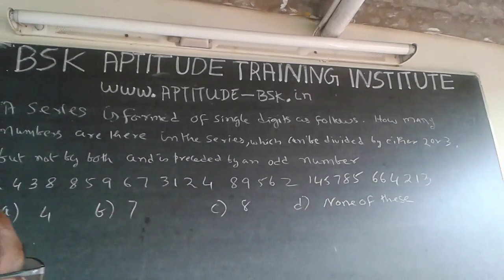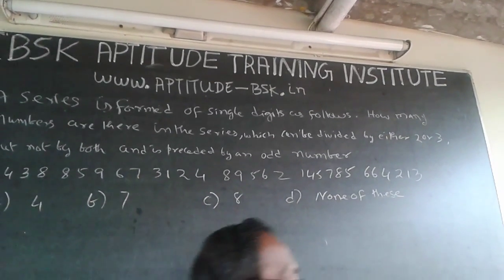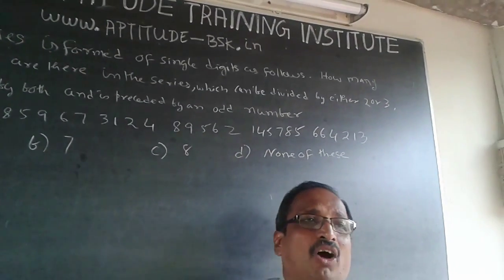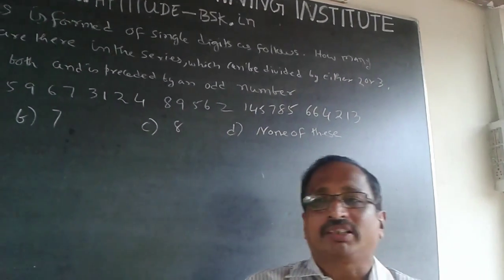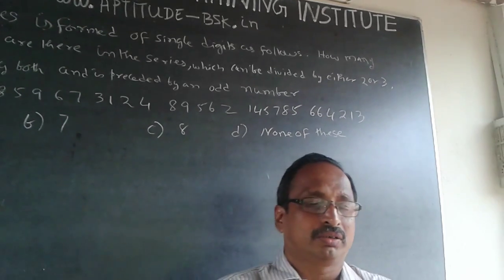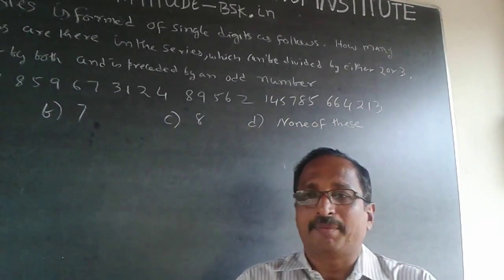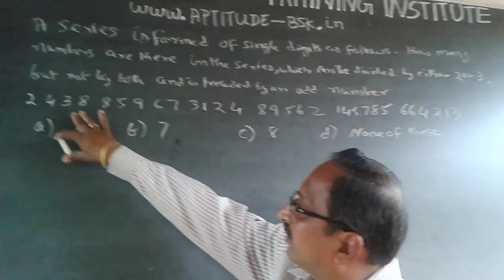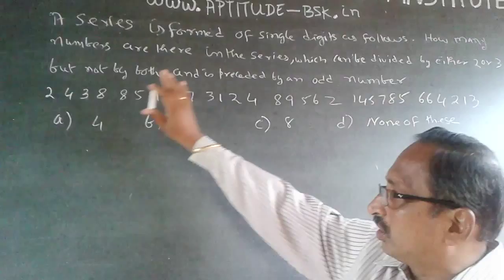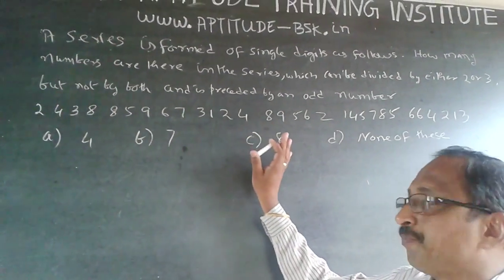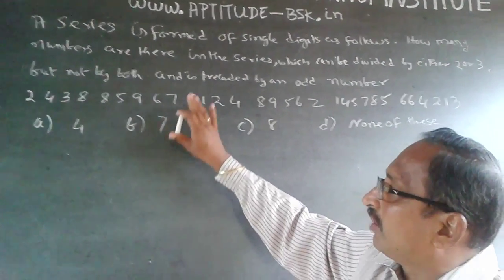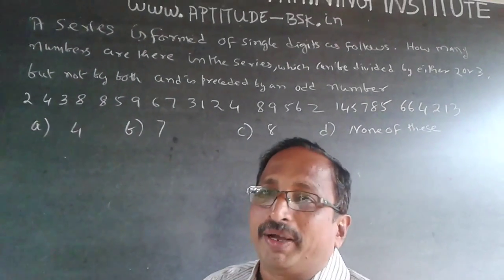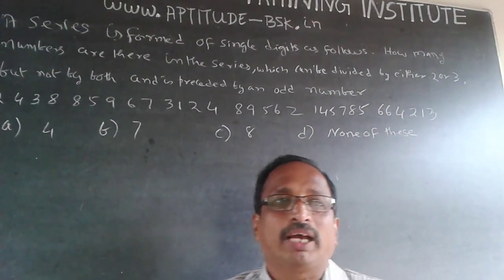1, 3. The options are 4, 7, or 8 numbers. This is more of a quantitative application on number series — the properties or rules of numbers. This can also be called a logical reasoning question. Either way, it is set on numbers. A series of single digit numbers is given; from these you have to find a number which is either divisible by 2 or by 3, not by both, and should be preceded by an odd number.